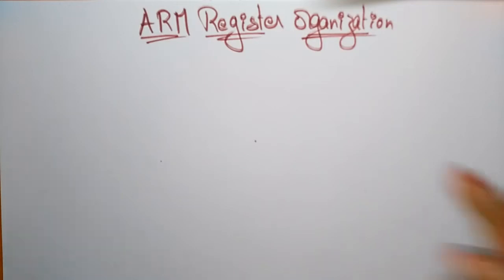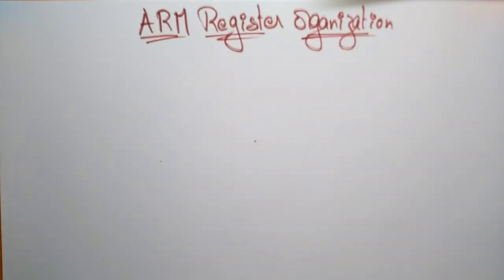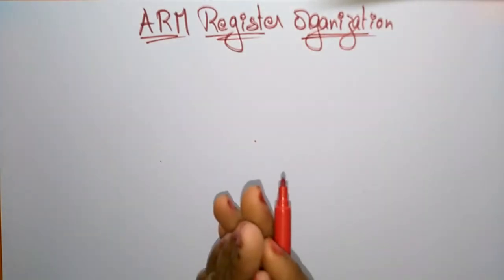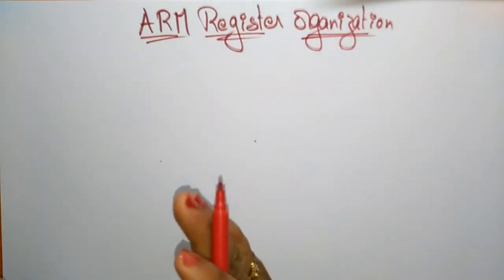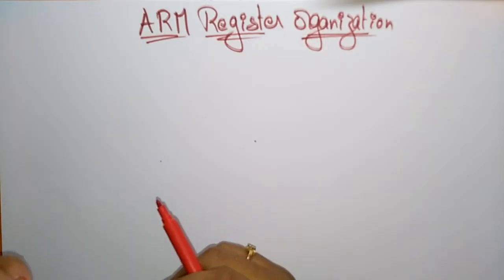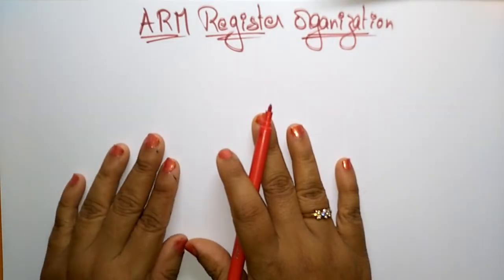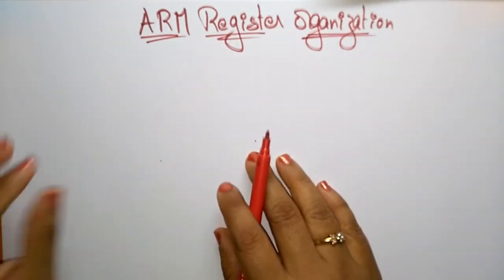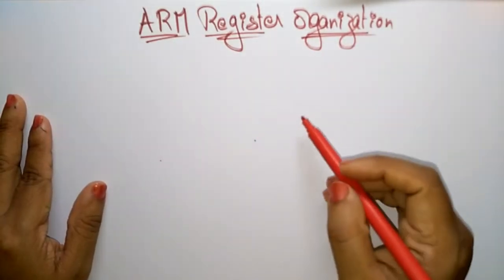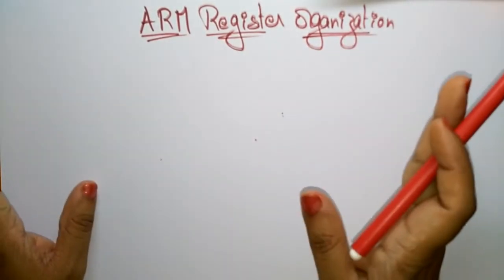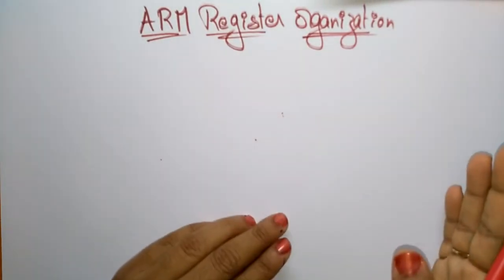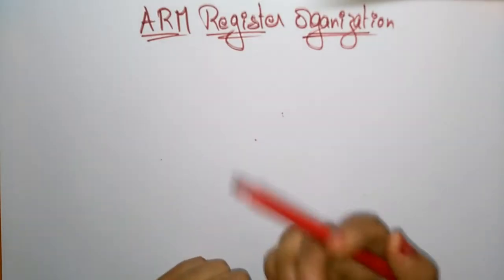Welcome back. Coming to the next topic: ARM register organization. In the previous video I explained about the ARM architecture — Advanced RISC Machine architecture. Now let's see the register organization or register sets. ARM is a load/store architecture because everything — whatever operations have to be performed in the ALU — can be done only through registers. Everything will be handled by registers: storing and retrieving data by the ALU only through registers.